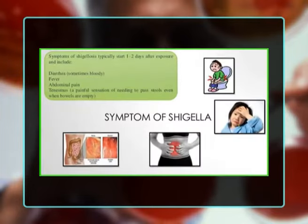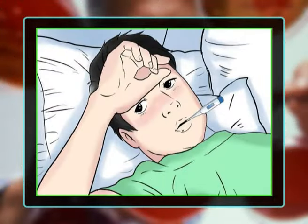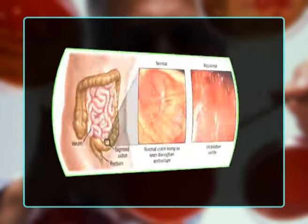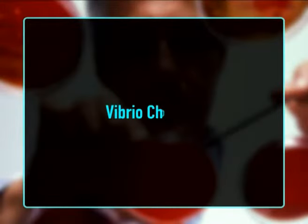Shigella: the source is humans and primates. Because it has a low infectious dose, the main mode of transmission is person-to-person contact, though it can also be transmitted through infected food and water. Symptoms of shigellosis are fever and watery diarrhea; the infection can also manifest as a dysenteric syndrome, which includes fever, abdominal cramps, tenesmus, and frequent small-volume bloody stools containing mucus.